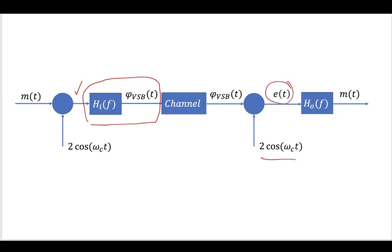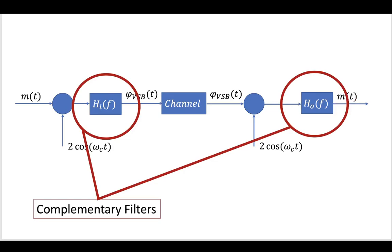It would pass through the channel, and then at your demodulation, you would apply your carrier frequency to get some signal E of T. And then you would pass this E of T through a low-pass filter, and this one is H out. And when this passes through this, you would eventually be able to recover your message. And so the key to vestigial sideband amplitude modulation is designing these two filters so that they're complementary and allow you to recover your original message. So these are the two complementary filters that VSB amplitude modulation relies on.